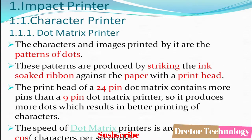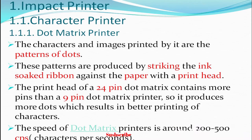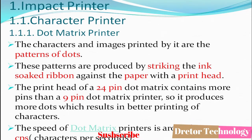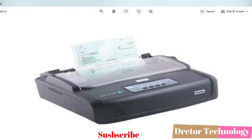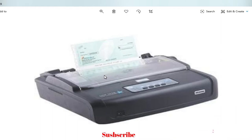The print head of a 24-pin dot matrix printer has more pins than a 9-pin dot matrix printer, so it produces more dots, resulting in better print quality. The speed of a dot matrix printer is around 200 to 500 CPS (characters per second). The dot matrix printer is still used today in banks for passbook printing due to its low printing cost.